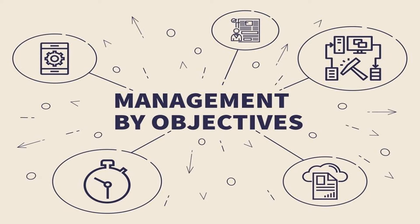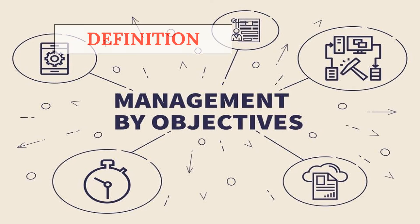Moving on to the next topic, which is management by objectives. Management by objectives is a strategic management model that aims to improve the performance of an organization by clearly defining objectives that are agreed to by both management and employees. According to the theory, having a say in goal setting and action planning encourages participation and commitment among employees, as well as aligning objectives across the organization.